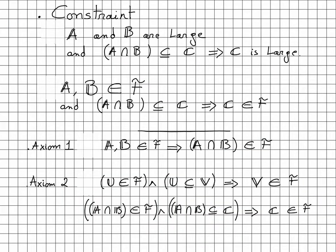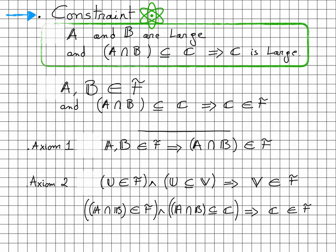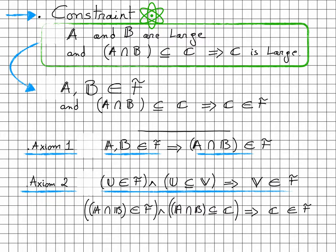One should note that those two axioms are exactly what we need to satisfy one of the constraints listed in the previous lecture: if A and B are large and the intersection of A and B is a subset of C, then C is large. Replacing 'large' by 'belongs to F', the same statement becomes: if A and B belong to F and the intersection of A and B is a subset of C, then C belongs to F. Using axiom 1, if A and B belong to F then their intersection belongs to F. Applying axiom 2 with the intersection as U and C as V, we can show that C belongs to F.